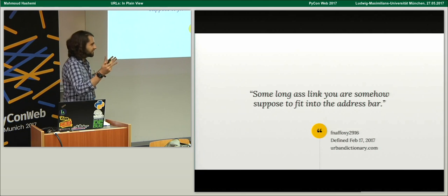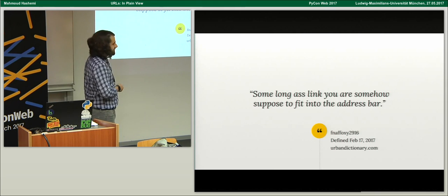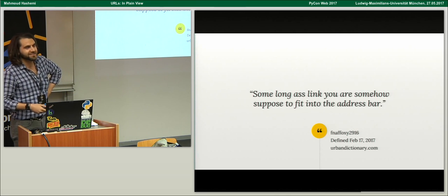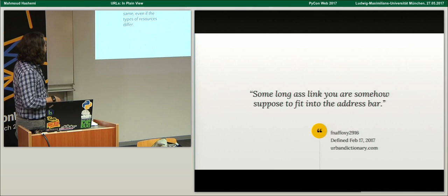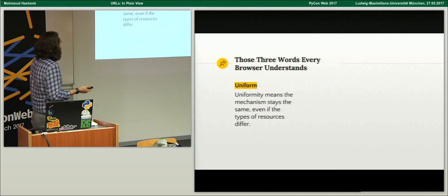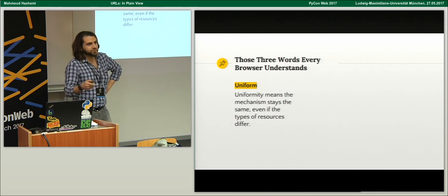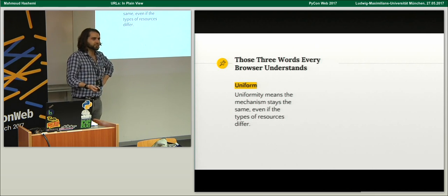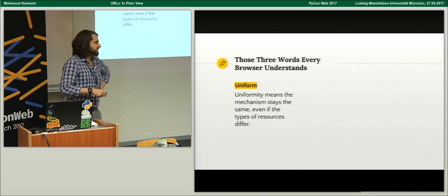So what is a URL? Well, according to UrbanDictionary.com, it is "some long-ass link you're somehow supposed to fit into the address bar." But really, what is a URL? A URL is Uniform — that's what the U stands for. It means that the mechanism stays the same even if the type of the resource differs. So if you're getting HTML, CSS, JavaScript, or some other long-ass link, it's uniform — everything can understand it.